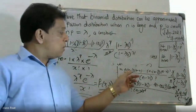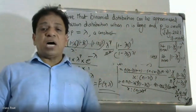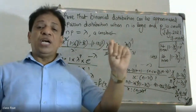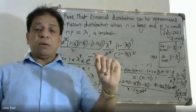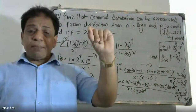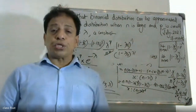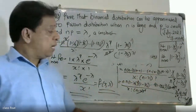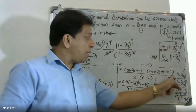To recap, we need nCx which equals n factorial divided by x factorial into n minus x factorial. Expanding n factorial gives n into n minus 1, n minus 2, etcetera, n minus x minus 1 into n minus x factorial, divided by x factorial into n minus x factorial.